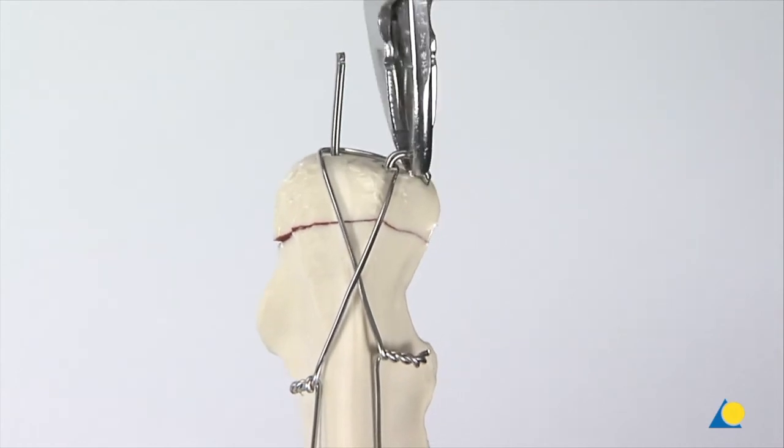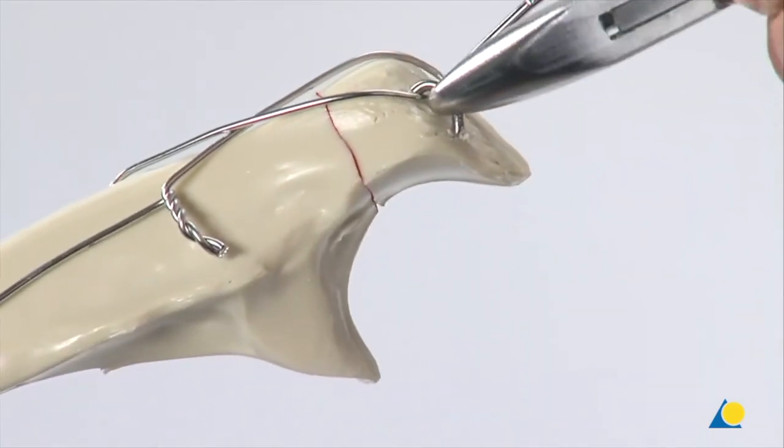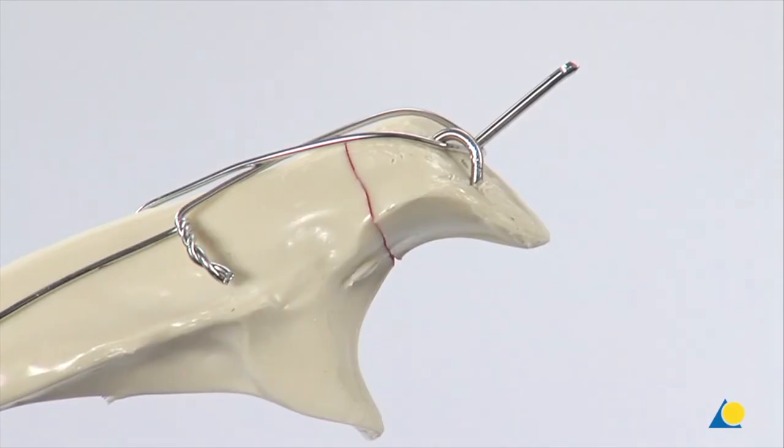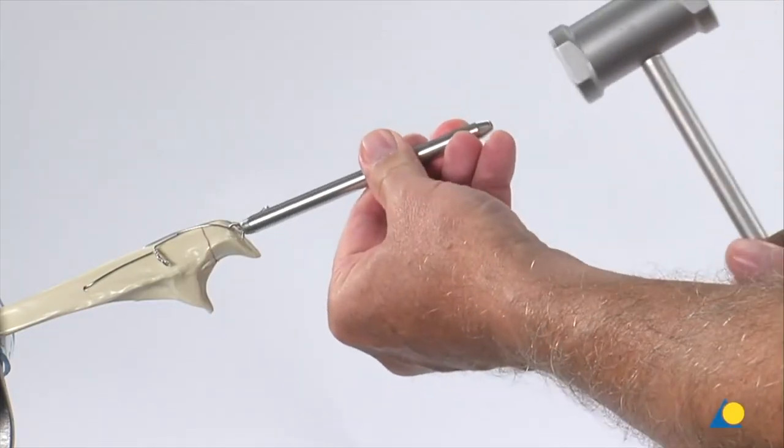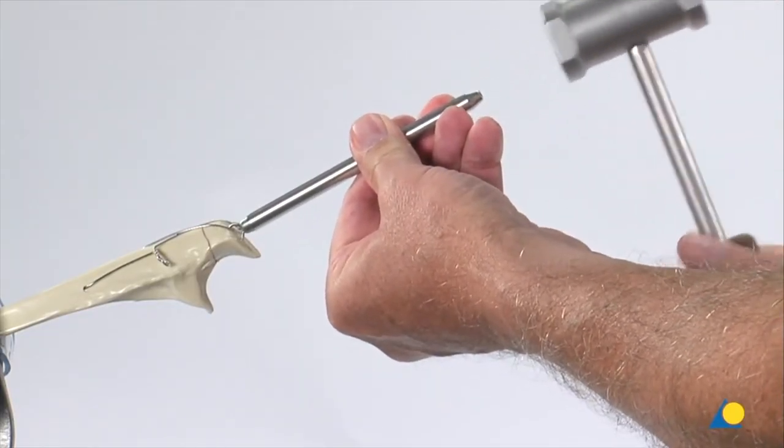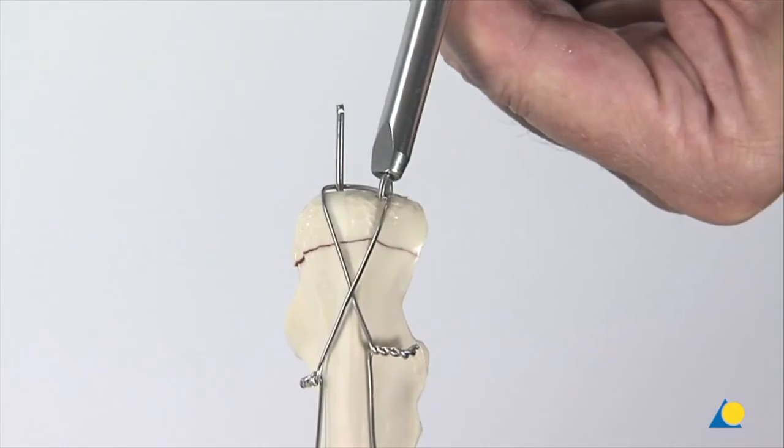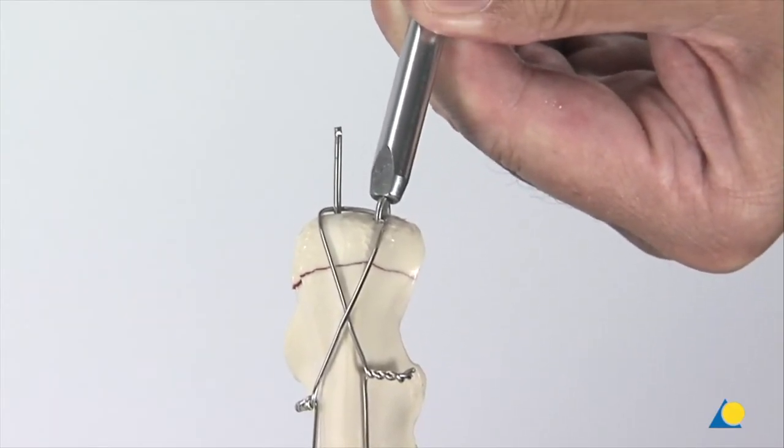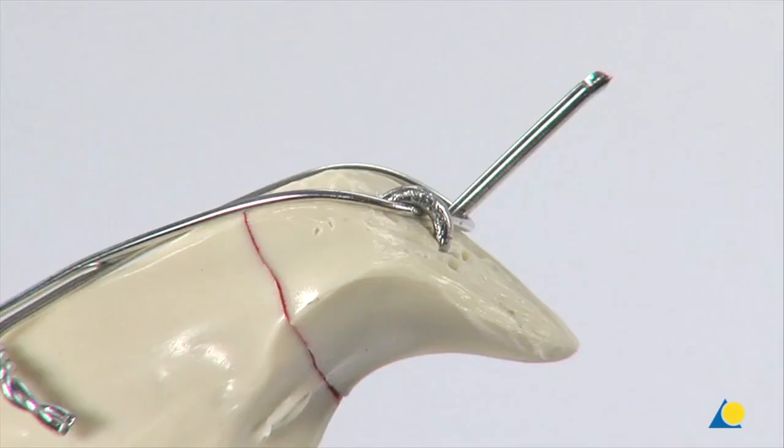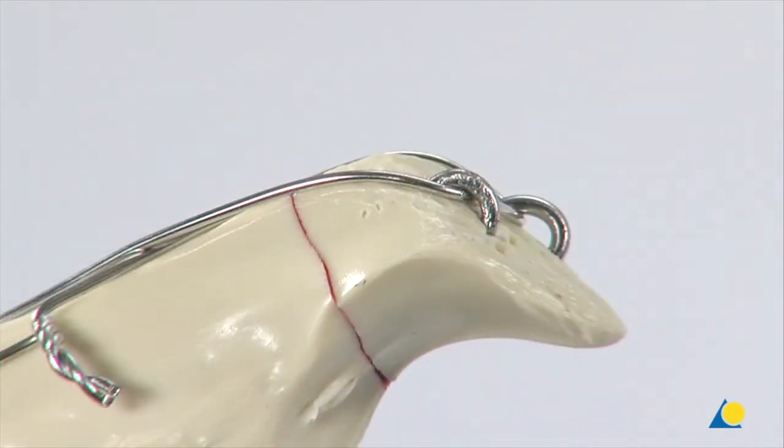The wire is rotated so that the cut end of the wire is lying on the posterior aspect of the olecranon. Using the bending iron and the hammer, the K-wire is impacted into the olecranon. This procedure is repeated for the second K-wire.